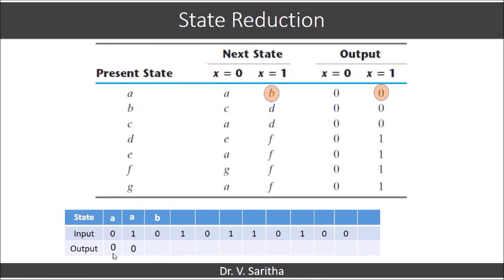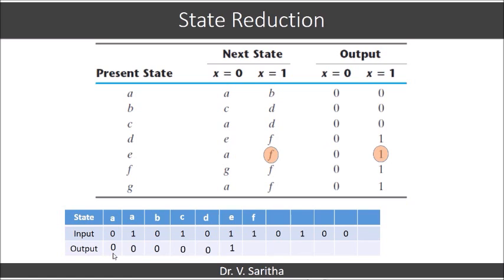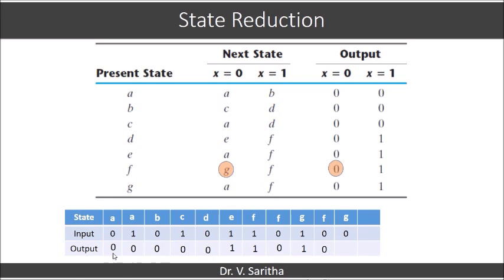Similarly, A on input 1 goes to state B with output 0. B on input 0 goes to next state C with output 0. C on input 1 goes to D with output 0. D on input 0 goes to E with output 0. E on input 1 goes to F with output 1. F on input 1 goes to F with output 1. F on input 0 goes to G with output 0. G on input 1 goes to F with output 1. F on input 0 goes to G with output 0. G on input 0 goes to A with output 0.